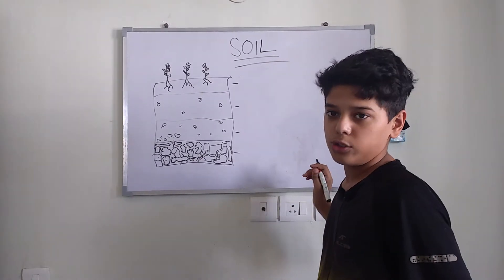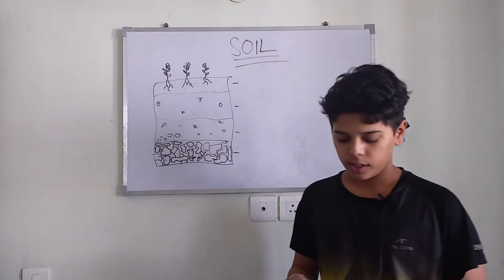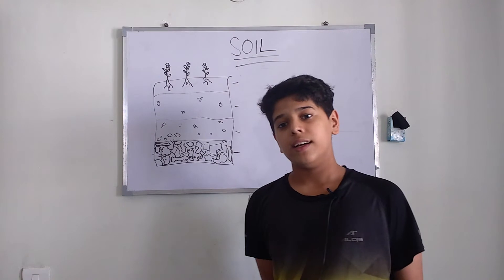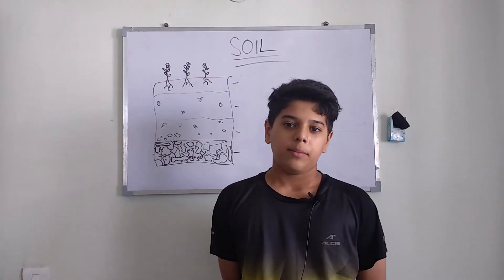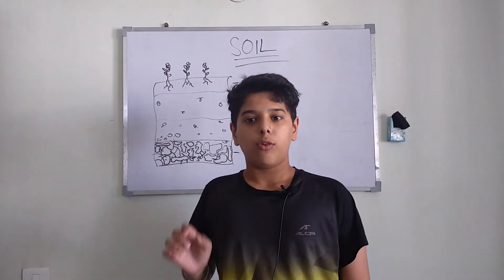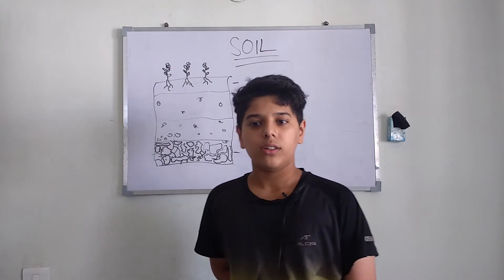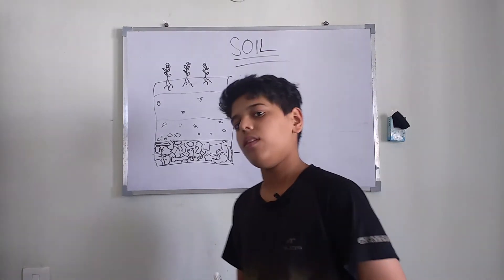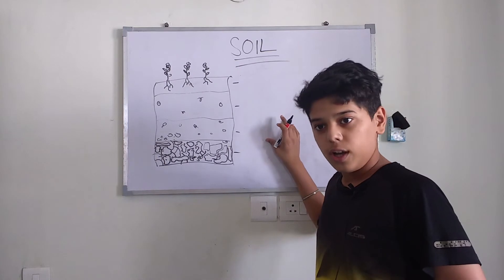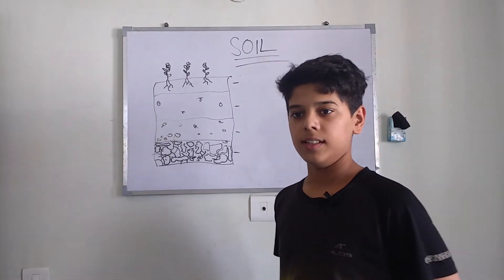Now we will see how soil is home to many living organisms. You must have seen during the rain that some earthworms or other insects come out of the soil. Have you ever wondered why they come out? They come out because they live in the soil, and when rain starts, water enters the soil and there is no space for them to live, so they come out to a place where there is no water. From this, we can see that the soil is home to many living organisms.